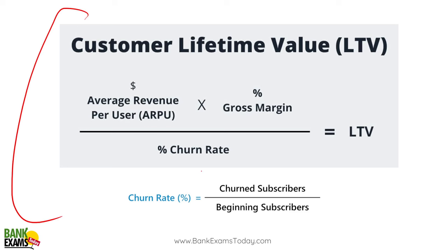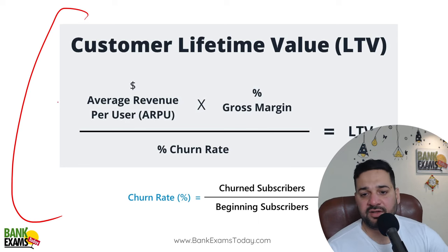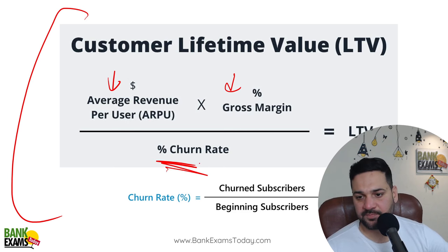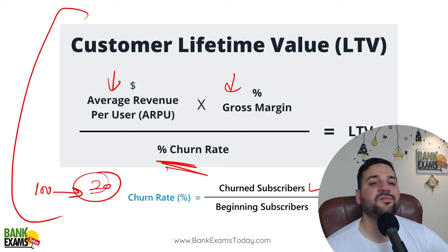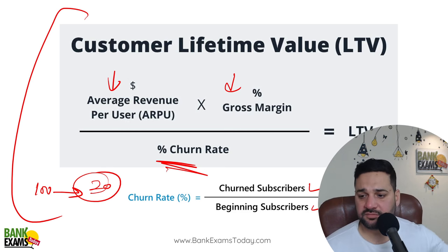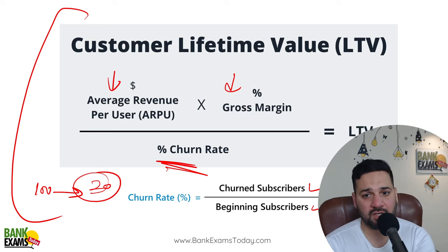Yeh formula hai. Average revenue per user — ek baar aap jab kisi store pe jate ho, kitna revenue aata hai aap se — multiplied by gross margin (20%, 10%, 30% jo bhi hai), divided by churn rate. Churn rate kya hoti hai? If there are 100 customers and 20 customers are gone — 20 customers churned — churned matlab kitne log aapka business chhodke chale gaye — divided by customers in the beginning, multiplied by 100. That is the churn rate. So: average revenue × gross margin ÷ churn rate = customer lifetime value.